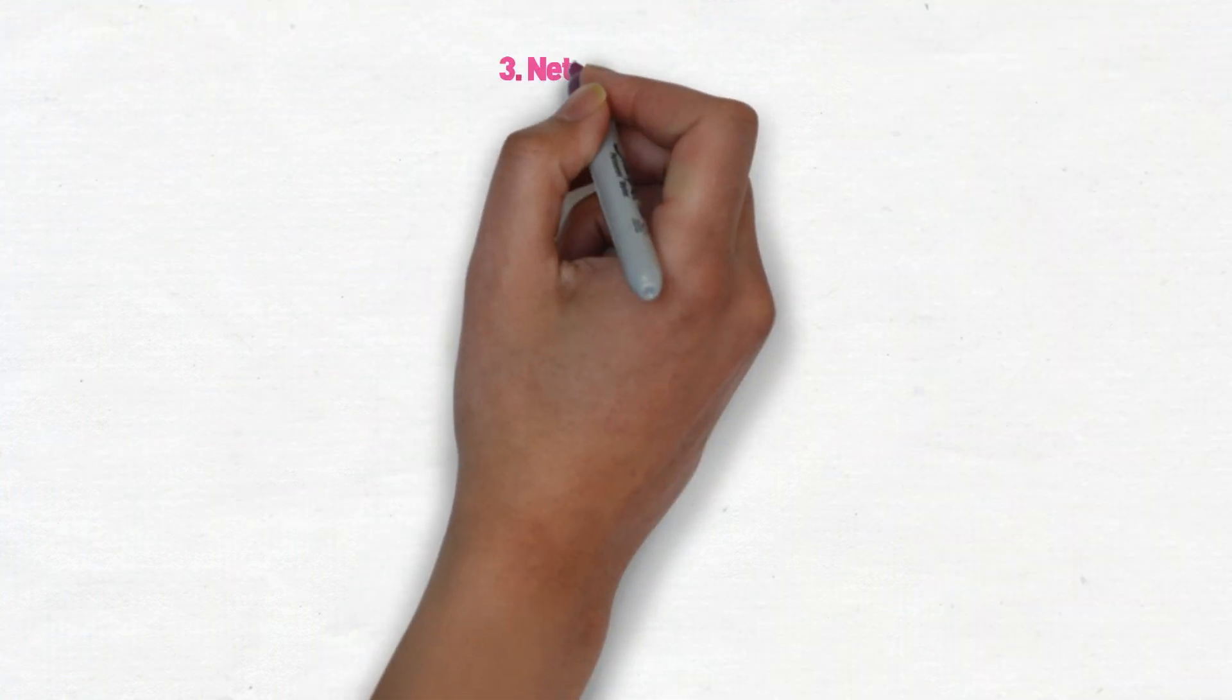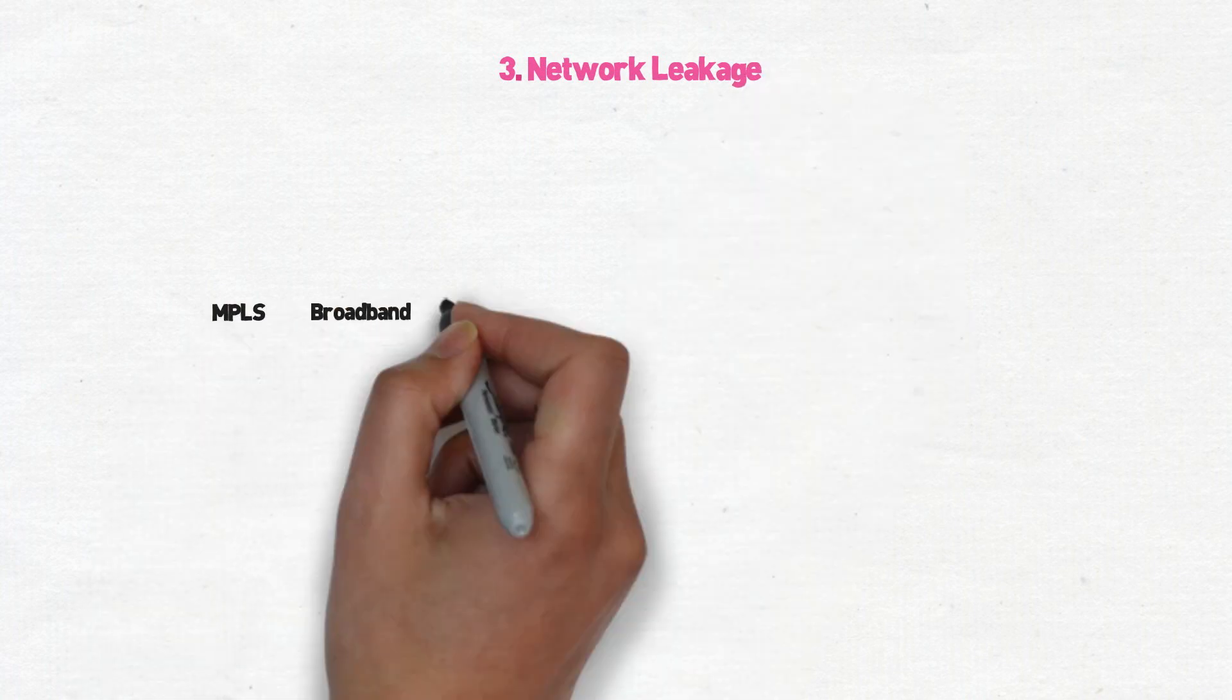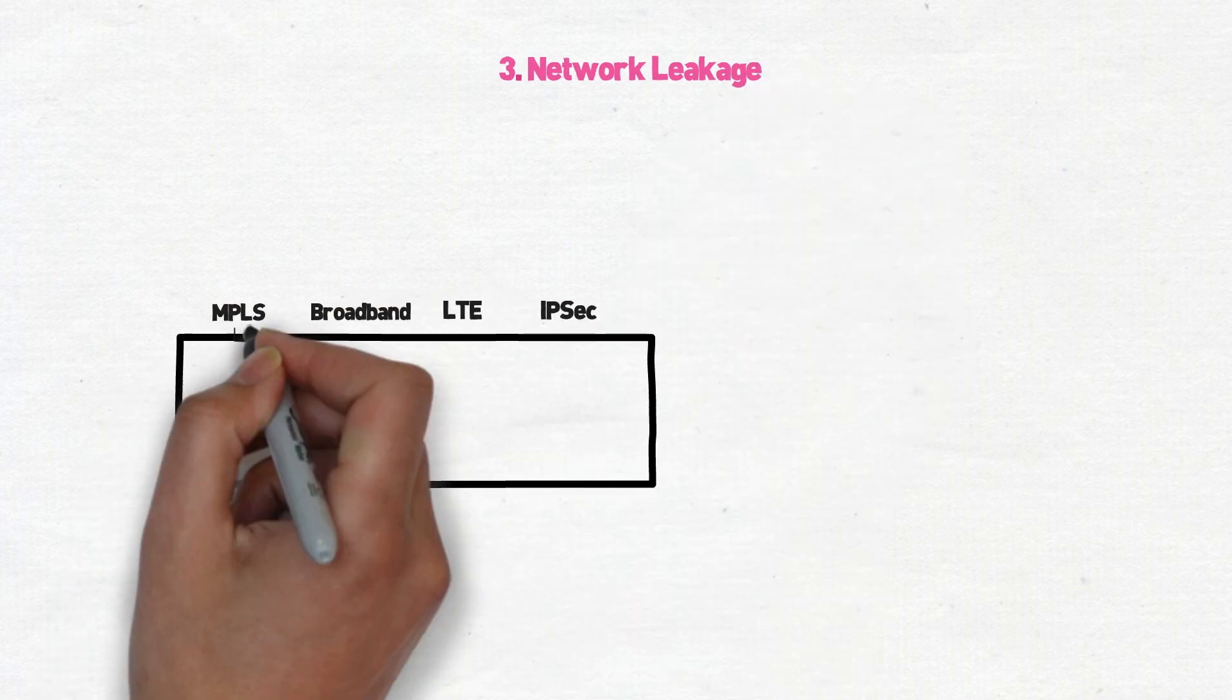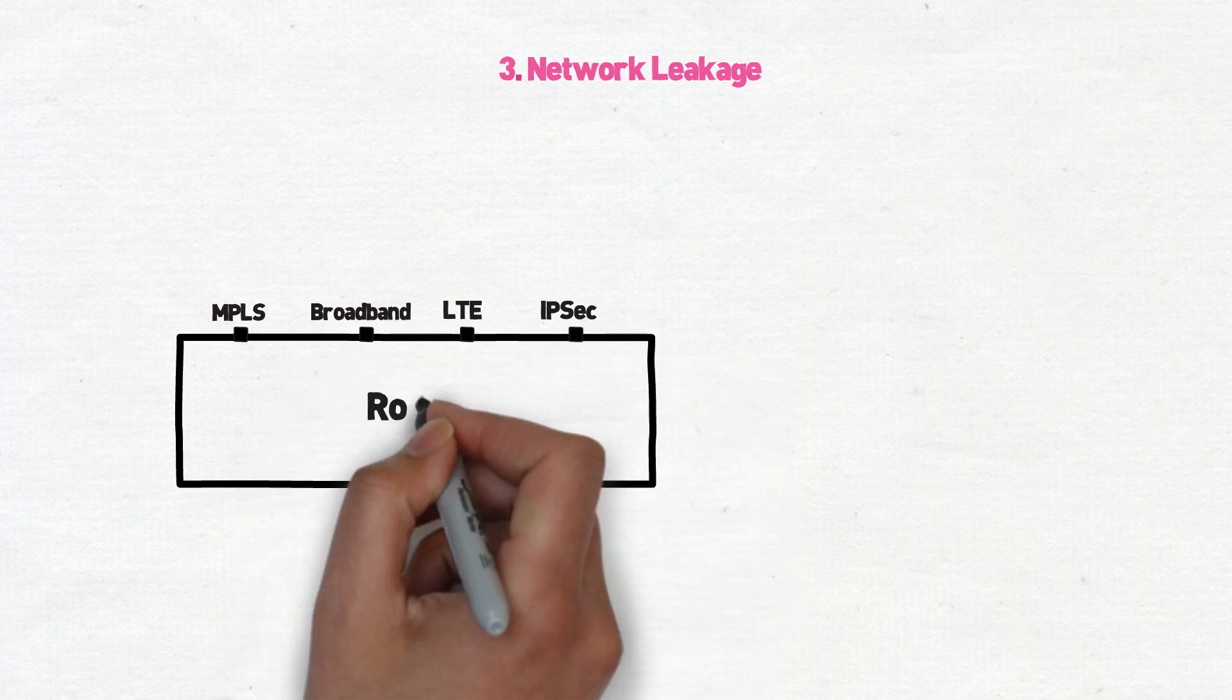Number three, look out for network leakage. MPLS, broadband, LTE, and IPsec tunnel overlays are just a few of the interfaces that SD-WAN has to manage.